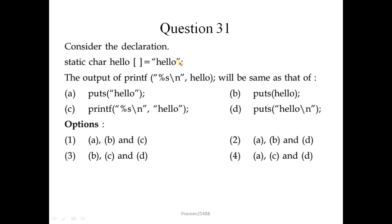Question number 31: consider the declaration static char hello. The output of printf("%s\n", hello) will be the same as puts(hello) — this is correct. puts(hello) is also correct. Option C is also correct. But puts with a slash n is not correct. So A, B, and C are correct; the first option is correct.